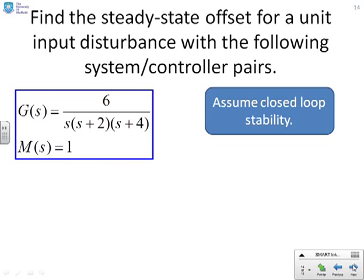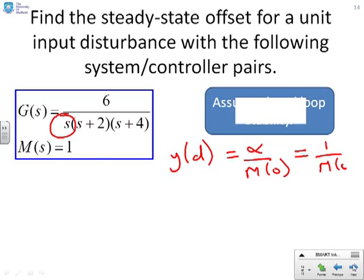What about this example? Well, here, you'll notice I've put an integrator into G of S. And what we were told is the steady-state offset is given by alpha over M of 0 for this particular scenario. That's what we derived in the earlier slides, where alpha is the magnitude of the input disturbance. And here we've chosen that to be 1. So the offset is going to be 1 over M of 0. I can now calculate this very quickly because M is 1. So what you get is Y of D equals 1. Quite a big offset.